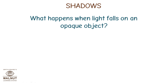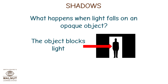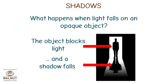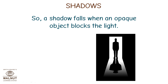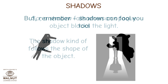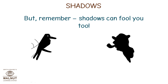What happens when light falls on an opaque object? The object blocks light and a shadow falls. So, a shadow falls when an opaque object blocks the light. The shadow kind of follows the shape of the object. But remember, shadows can fool you too.